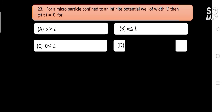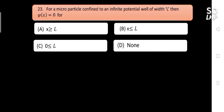For a microparticle confined to an infinite potential well of width L, potential V(x) equals zero for blank. Options are: A) x ≥ L, B) x < L, C) 0 < x < L, D) none of the above. Answer is A) x ≥ L.